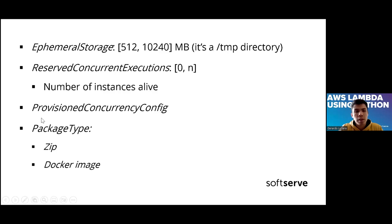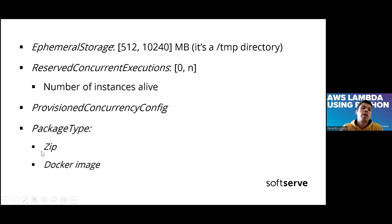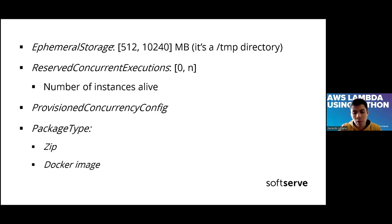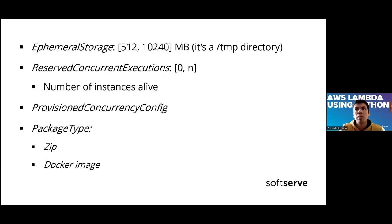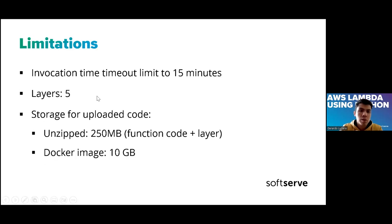Both of these options — reserving instances and keeping Lambdas alive — cost extra money, so you need to think carefully. We also have two options to deploy our code: zip your code — make a zip file, upload it to S3, and the Lambda downloads the code from there — or create a Docker image that will be run. Those are the main configurations and principal limitations of Lambda.